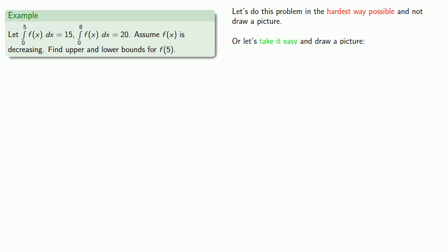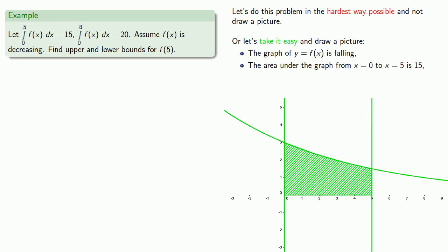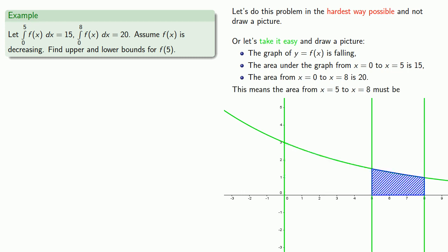So f of x is decreasing and so we know the graph of y equals f of x is falling. The first definite integral tells us that the area under the graph from x equals 0 to x equals 5 is 15 and the second tells us that the area of the graph from 0 to 8 is 20 and that means this last portion of area from x equals 5 to x equals 8 must be 5. And so we know the value of this definite integral is also 5.